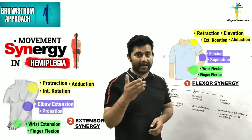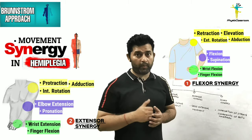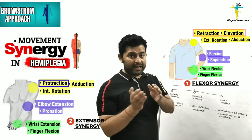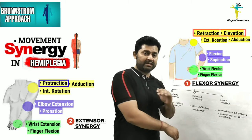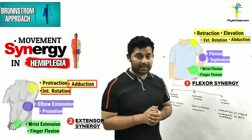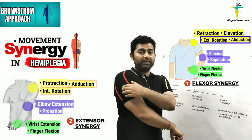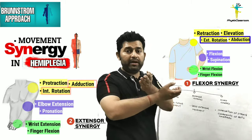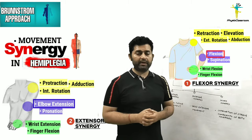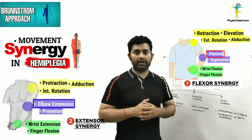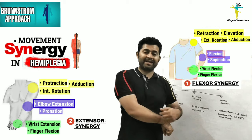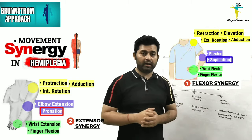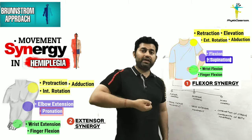Comparing the upper limb flexor and extensor synergies based on strong and weak components: shoulder elevation and retraction of the flexor synergy is stronger than the shoulder protraction of the extensor synergy. Shoulder adduction and internal rotation of the extensor synergy is stronger than shoulder abduction and external rotation of the flexor synergy. Elbow flexion of the flexor synergy is stronger than elbow extension of the extensor synergy. And forearm pronation of the extensor synergy is much stronger than forearm supination of the flexor synergy.